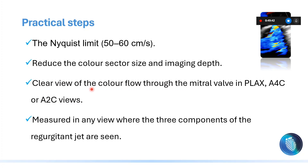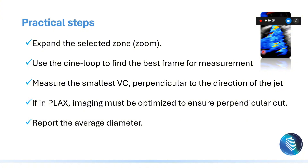Then get a clear view of the color flow across the mitral valve, either in parasternal long axis, apical 4, or apical 2-chamber view. Then measure in any view that shows the three components of the jet — make sure you can see the flow convergence, the vena contracta, and the jet expansion. Also expand the image using the zoom option, because with zooming and increasing the image size you will have less margin of error in your assessment.